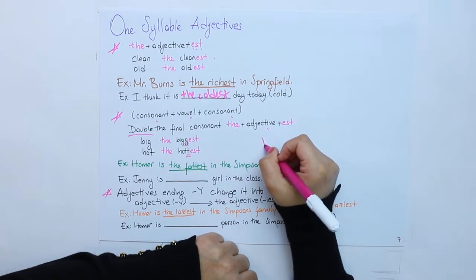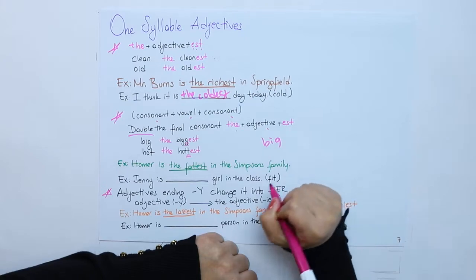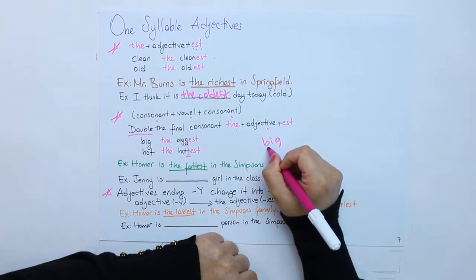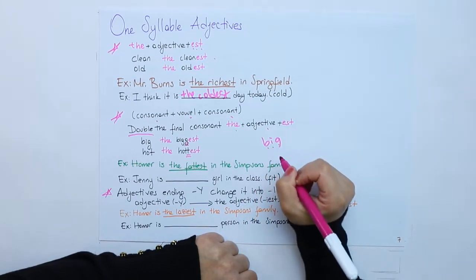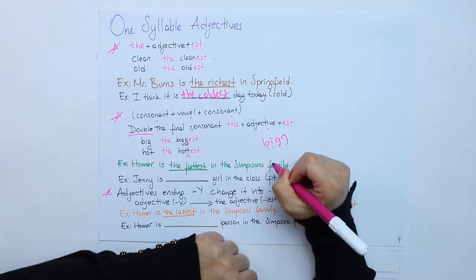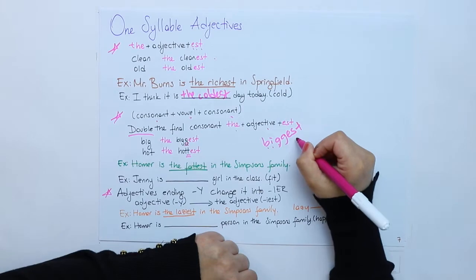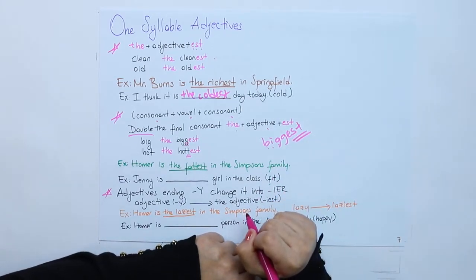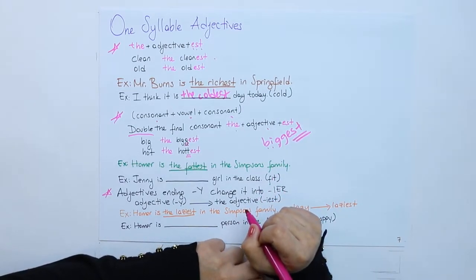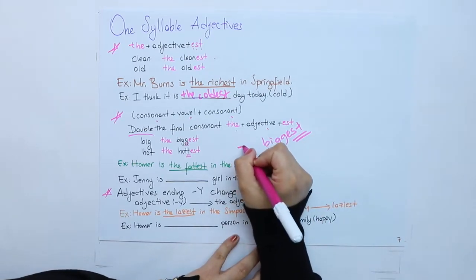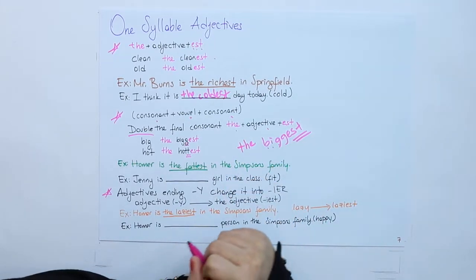Big. Remember, we talked about the same consonant, vowel, consonant. Then we doubled again and put EST, which shows me that this is the symbol of superlative form. But don't forget THE before it.